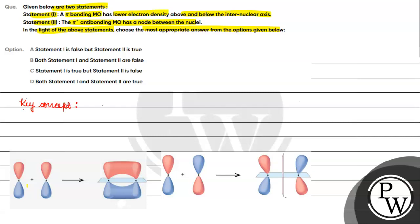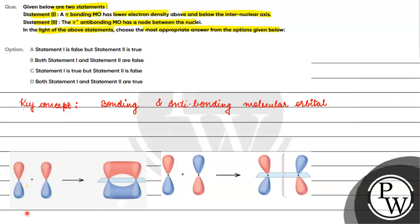The key concept for this question is bonding and antibonding molecular orbital. If we have a pi bonding molecular orbital...